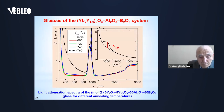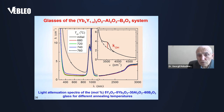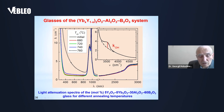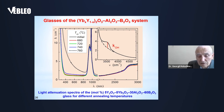This slide shows absolute light attenuation spectra of the glasses codoped with terbium for different annealing temperatures. It is seen that an annealing temperature lower than 740 degrees Celsius does not lead to evident crystallization of the glass, and the hydroxyl ion concentration in the glasses is relatively low.